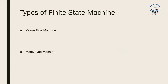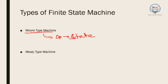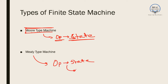Finite state machines are of two types: Moore type machines, named after Edward Moore, and Mealy type machines, named after George Mealy. In a Moore type machine, the output depends only on the state and not on the input. A counter is an example — the output depends on the state alone. In Mealy type machines, the output depends on both the state and the present input.